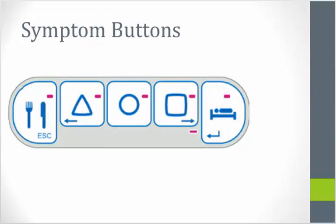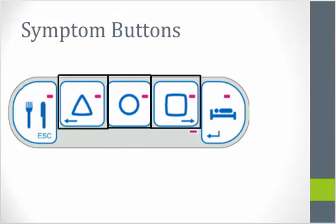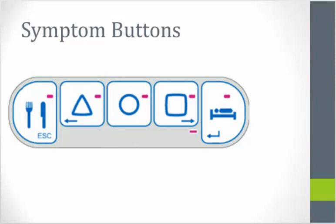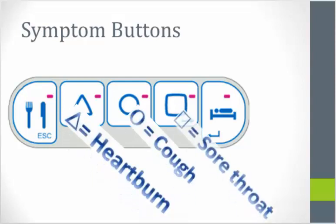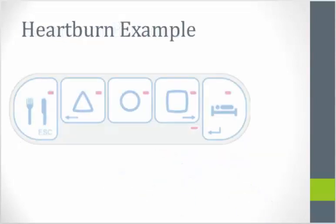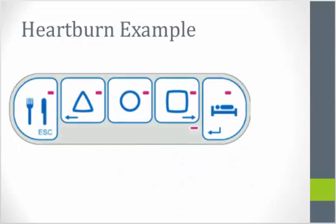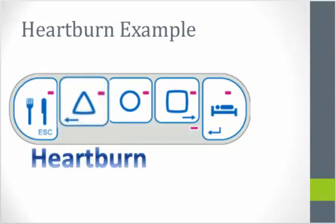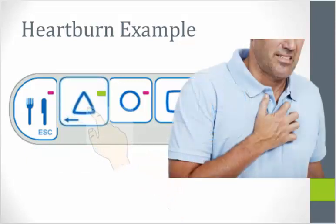The next buttons I'd like to introduce to you are the symptom buttons. The receiver is able to capture anywhere from one to three symptoms. Each of these buttons may have a different symptom assigned to it. You will work with a nurse prior to the test to assign your symptoms to these buttons. To give you an example of how the symptom button works, assign the triangle button to your heartburn symptom. Once you begin to experience heartburn, press the triangle button and a light will illuminate for three seconds confirming that a symptom button was pressed. Do not press the triangle button again until the symptom returns.